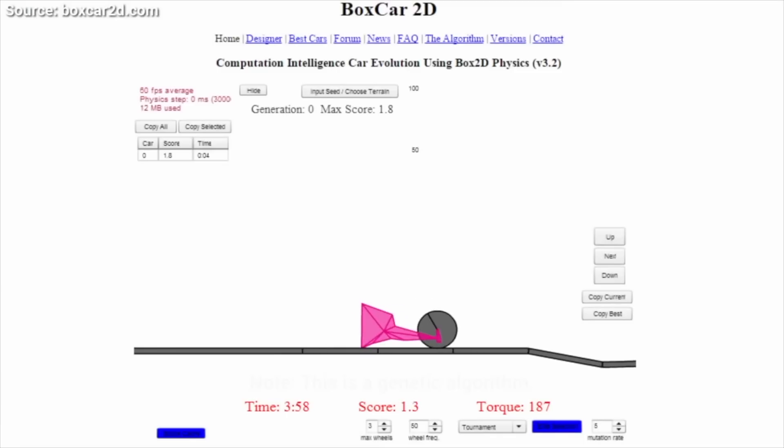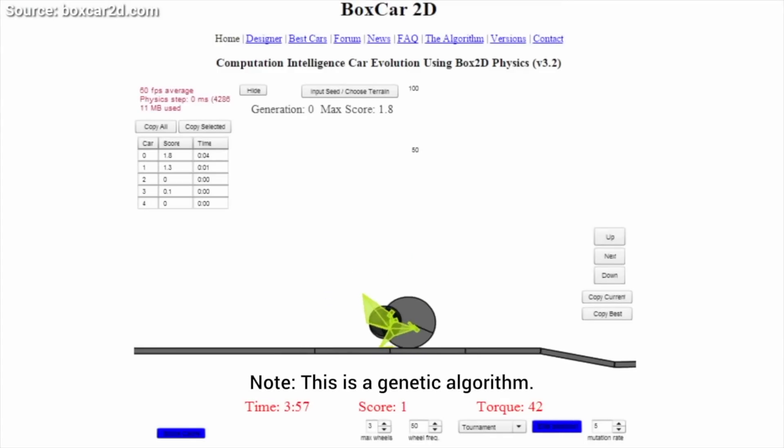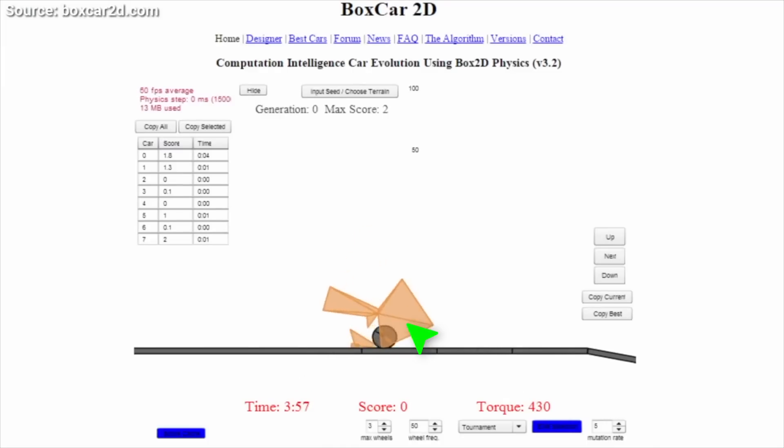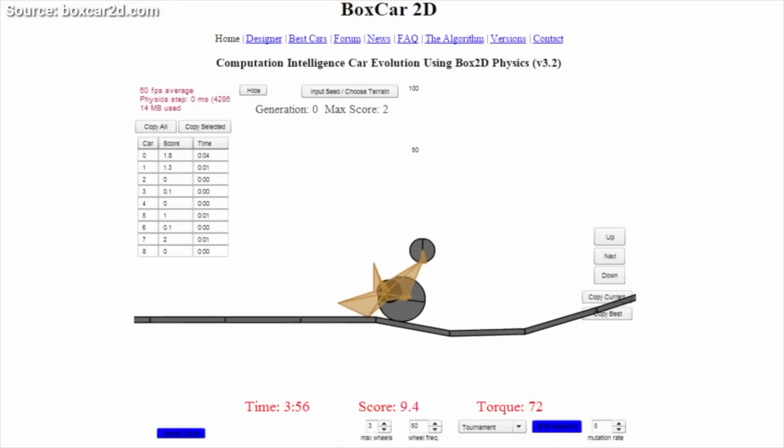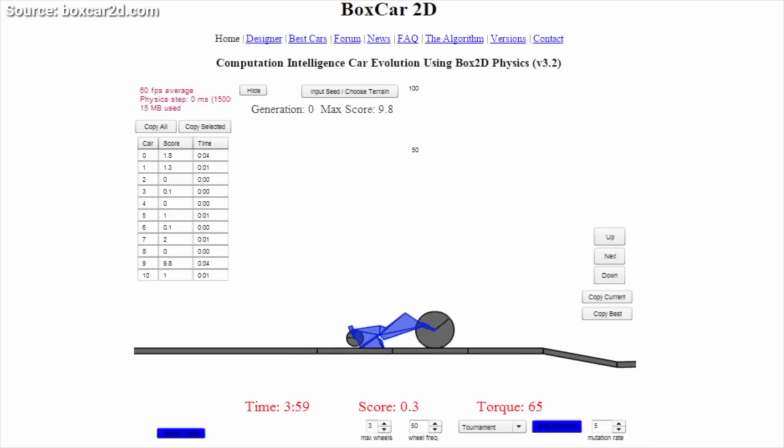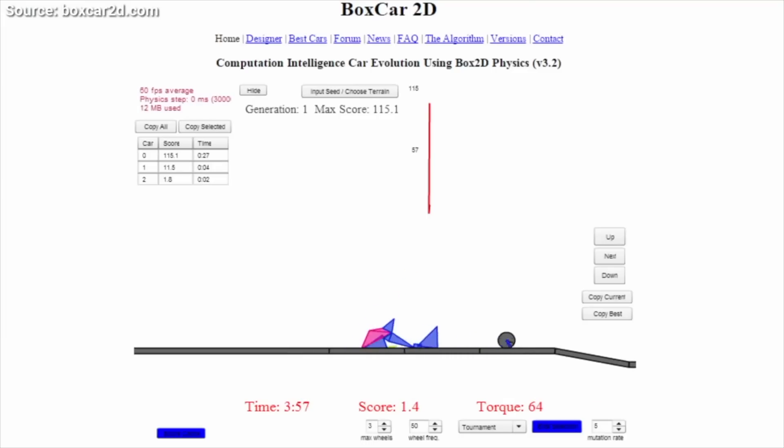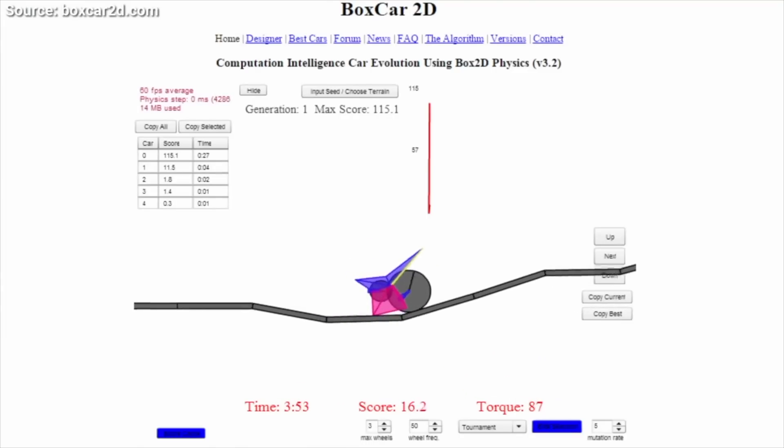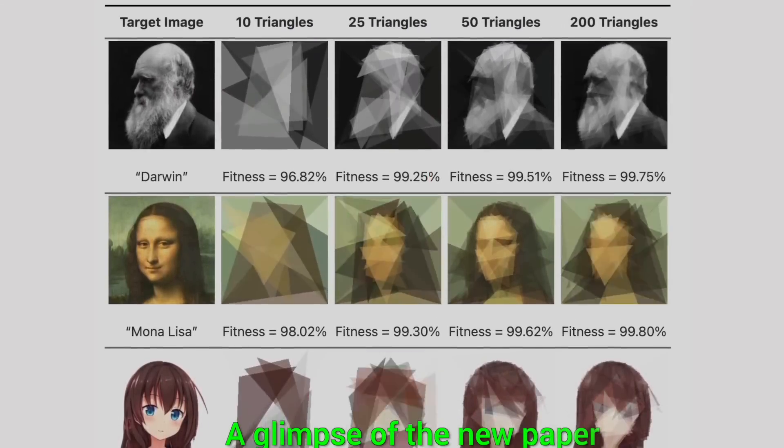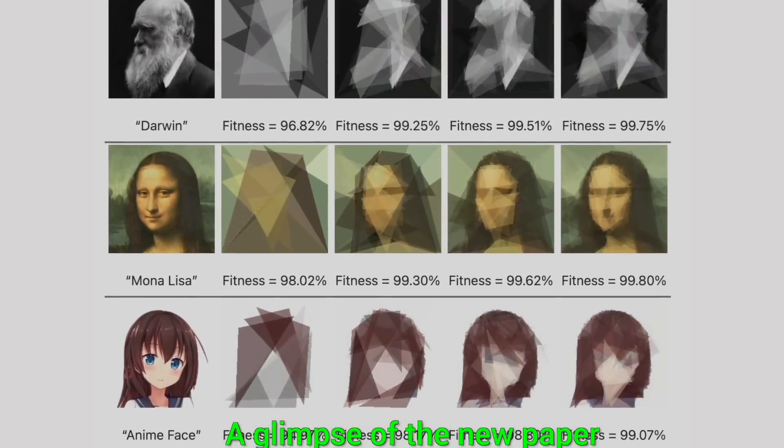A few years ago, a really fun online app surfaced that used a genetic algorithm to evolve the morphology of a simple 2D car with the goal of having it roll as far away from a starting point as possible. A genetic algorithm, what is that? Well, it is a super simple technique where we start out from a set of random solutions and likely find out that none of them really work too well.